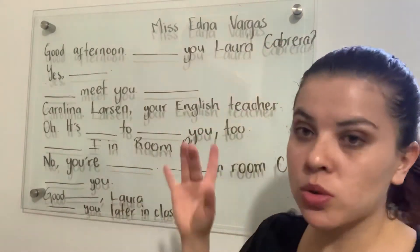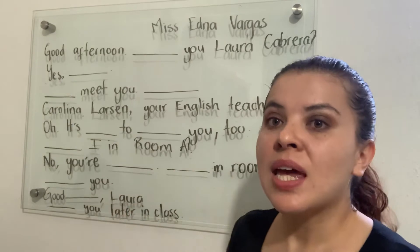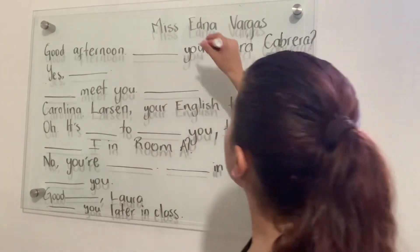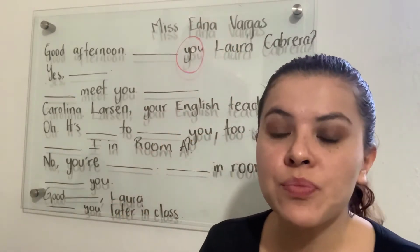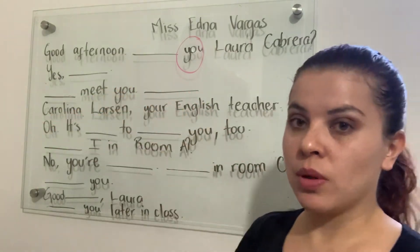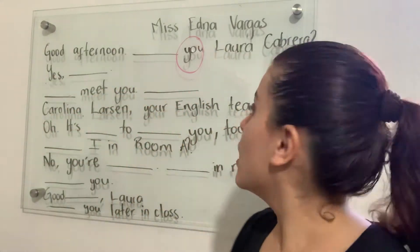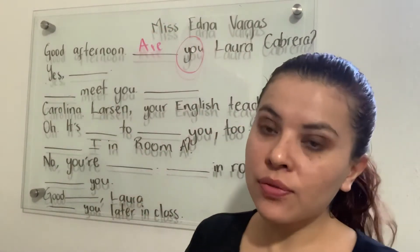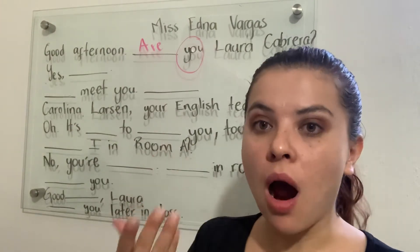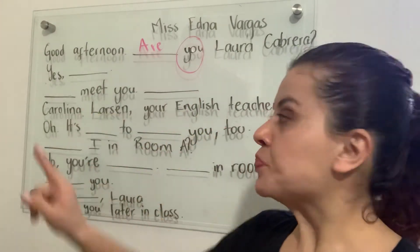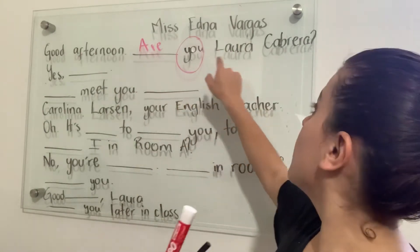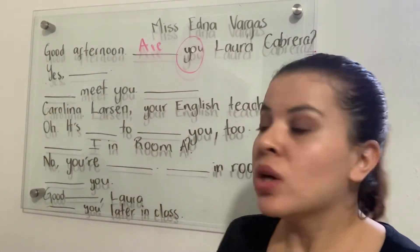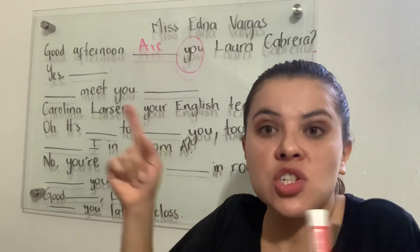Now I have here a small conversation I'm going to work with. In the first line I have 'Good afternoon.' As you can see, I have the word 'you' — second person. Be careful with 'you.' I'm going to use the verb to be 'are' because verb to be 'are' is used with second person: 'Are you Laura Cabrera?'